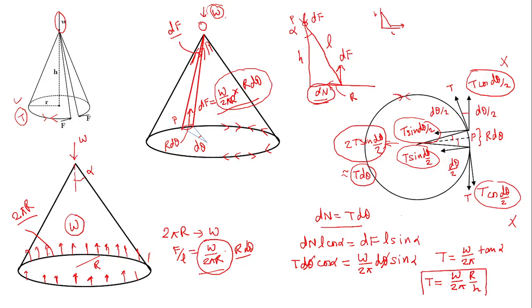So the tension in the perimeter is T = Wr/(2πh), and this is the answer. I hope you understood the concepts. If you have any doubts or queries, please raise them in the comments and I will try to explain further. Thank you.